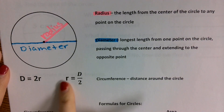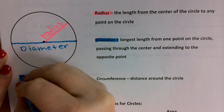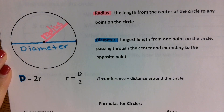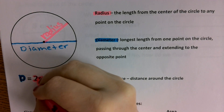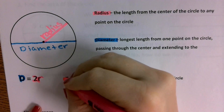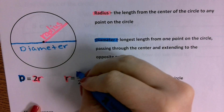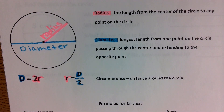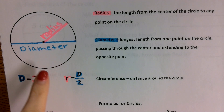Down here I have a couple of little equations. The diameter D can be found by taking the radius and doubling it — if you double the radius, that gives you your diameter. Same thing: if you wanted to find the radius, you could take the diameter and divide it by 2. The radius is half the diameter; the diameter is twice the size of the radius.